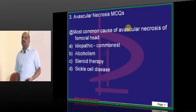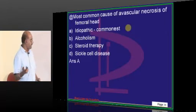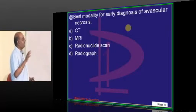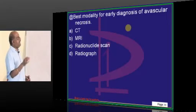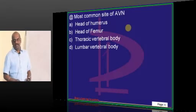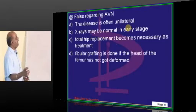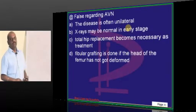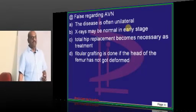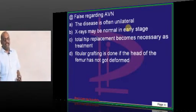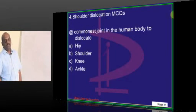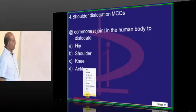Quick review questions: What is the most common cause of avascular necrosis? Idiopathic is the commonest. Best modality for diagnosis? MRI. Most common site? Head of the femur. What is true about avascular necrosis? It is often bilateral — that is the key point to remember.